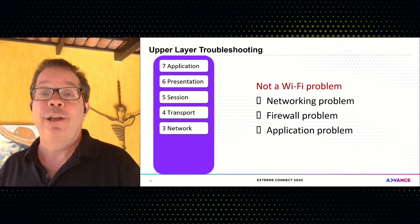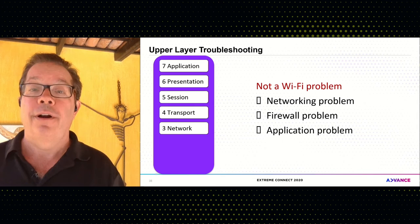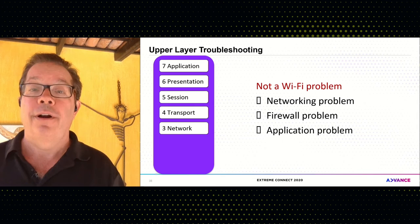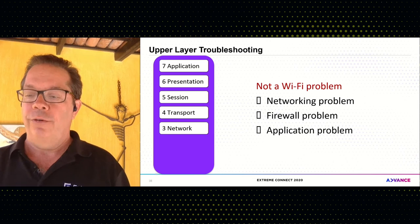Even though Wi-Fi is always going to get the blame, about 60 or 70% of the time Wi-Fi is not the problem — maybe even higher. It's usually an upper layer problem. If it's a layer three problem, it's going to be a networking problem — routing, misconfigured IP addresses. Layer four: a firewall blocking something. And as we move into the higher layers, you have application problems — maybe an application server is down.